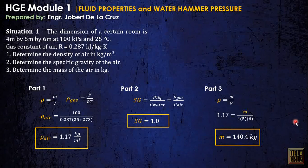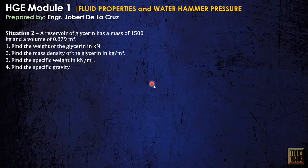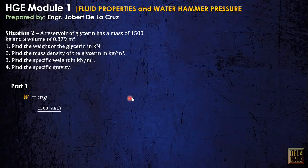Another situation: A reservoir of glycerin has a mass of 1,500 kilograms and a volume of 0.879 cubic meters. Find the weight of the glycerin. From the basic formula, weight equals mass times gravity. Substitute: mass times the gravity, ang lalabas dito is newtons. So we need to convert this into kilonewtons divided by 1,000. So we have this W.